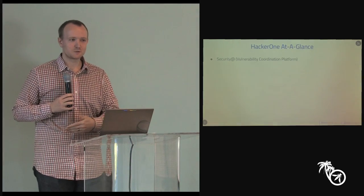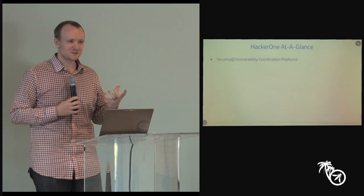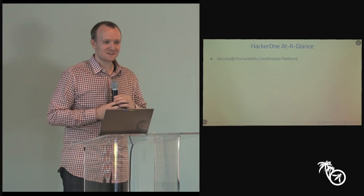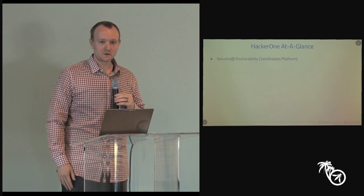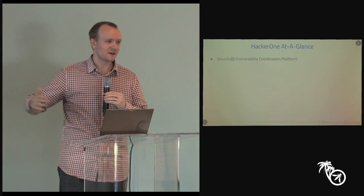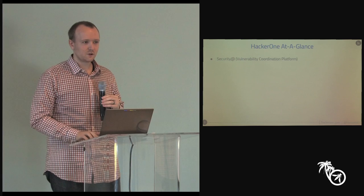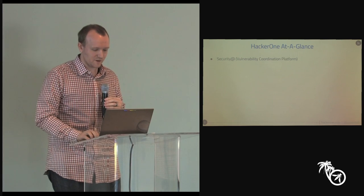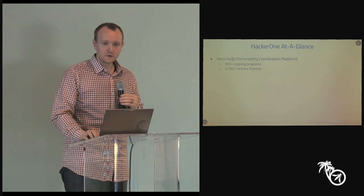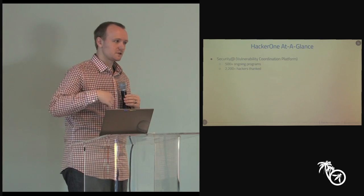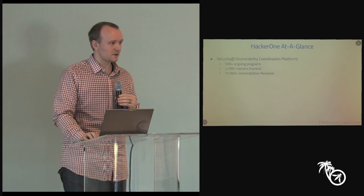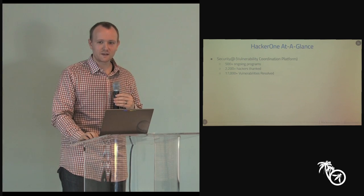There are a lot of different names for this in the industry. You just heard me using responsible disclosure, which is what we called the program at Facebook. More commonly you'll hear it called vulnerability coordination or vulnerability disclosure, but we simply refer to it as security app. This is as simple as setting up security@yourcompany.com and having a clear, defined process for researchers to contact you with potential vulnerabilities they've identified. We host about 500 of these ongoing programs now, and a little over 2,000 individual hackers have disclosed vulnerabilities to our customers through this process, with over 17,000 unique vulnerabilities identified.